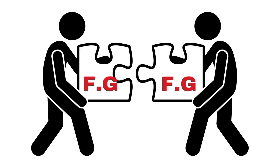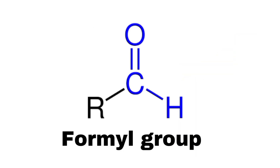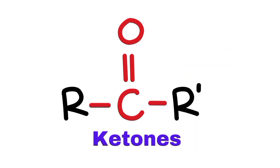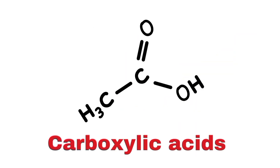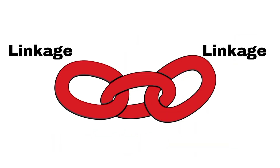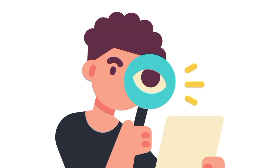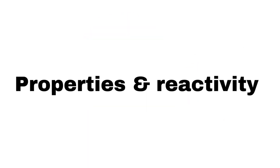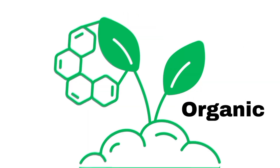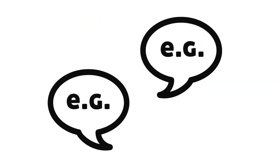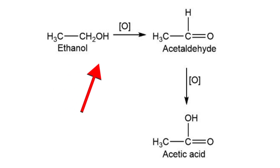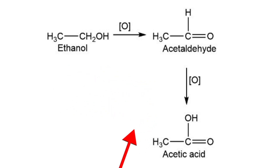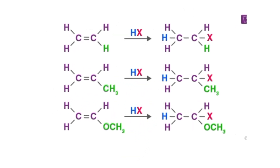There are many other functional groups such as alcohol, formyl group, ketones, and carboxylic acids. Functional groups play a crucial role in determining the properties and reactivity of organic compounds. For example, alcohols can undergo oxidation to form aldehydes or carboxylic acids, while alkenes can participate in addition reactions.